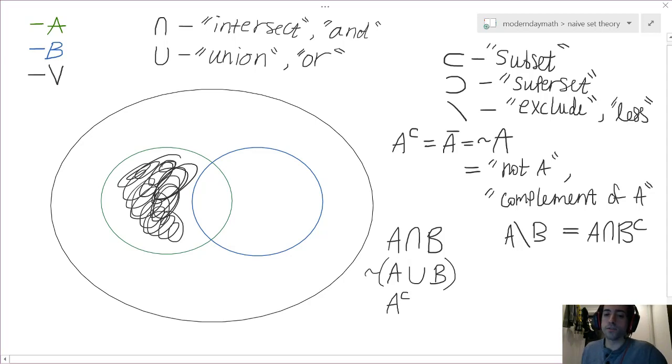And, of course, when we talk about B less A, we're going to have B intersect A complement. We just move this scribbling over to this section of B.